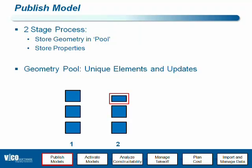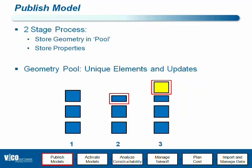A second publish is always faster than the first one, unless you change the entire content of a model, in which case it takes exactly the same amount of time. With this example, we change the height of one element, meaning only that element will have to be updated during the publish. The same thing happens when you add a new element — going from two to three elements. This element did not change in size or dimensions, but we added a new yellow element, so only the geometry plus properties of that yellow element are added to the geometry pool.